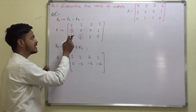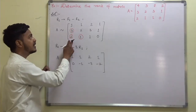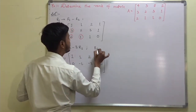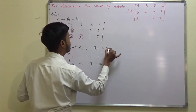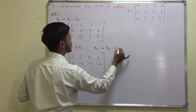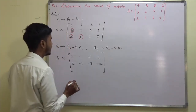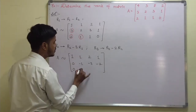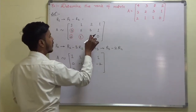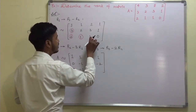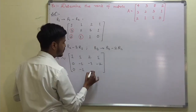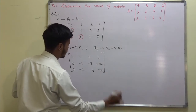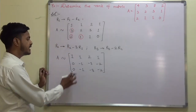After making this element 0, now make the next element 0 while keeping the existing zero. So r3 changes to r3 minus 2r1: 2 minus 2 is 0, 1 minus 2 is minus 1, then 1 minus 4 is minus 3, and 0 minus 2 is minus 2.